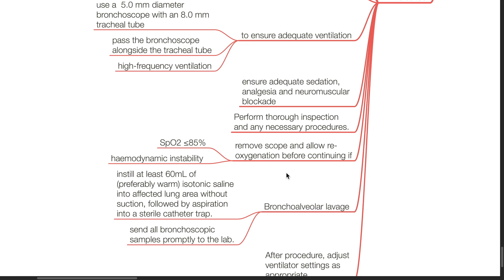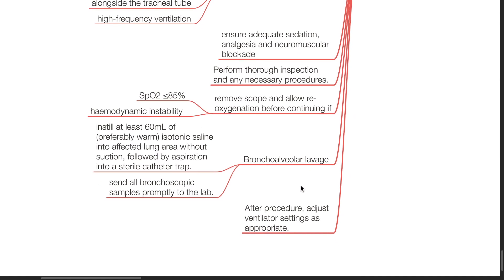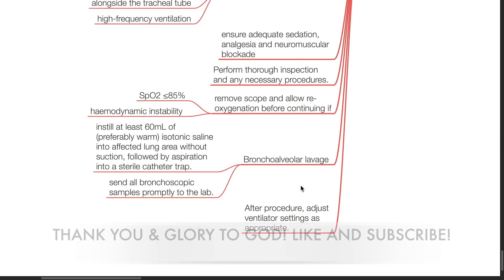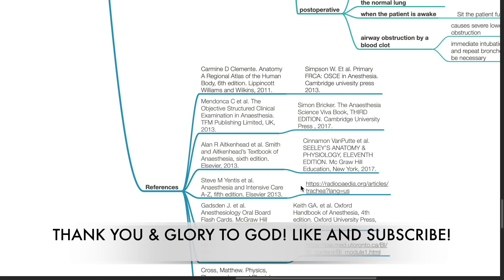Bronchoalveolar lavage: instill at least 60 mL of preferably warm isotonic saline into the affected lung area without suction, followed by aspiration into a sterile catheter trap. Send all bronchoscopic samples promptly to the lab. After the procedure, adjust the ventilator settings as appropriate. These are my references. Thank you.